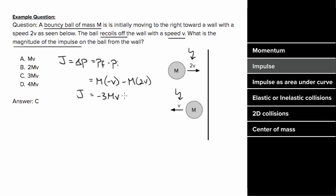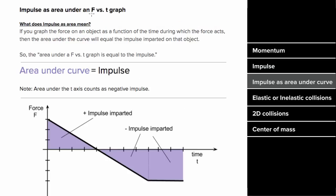This makes sense — the net impulse has to point in the same direction as the net force. The wall exerted a force to the left, so the impulse also points left with a magnitude of 3mv. If you get a force versus time graph, the first thing you should think about is that the area under that graph is going to equal the impulse on the object.